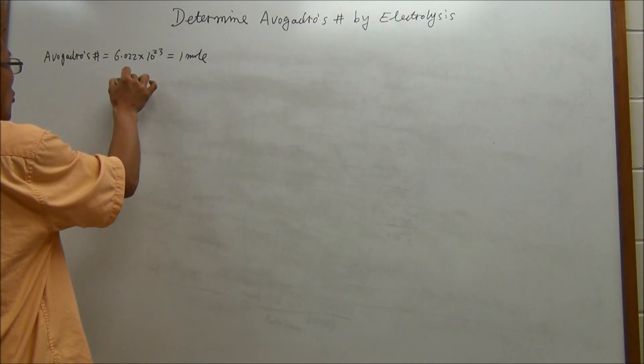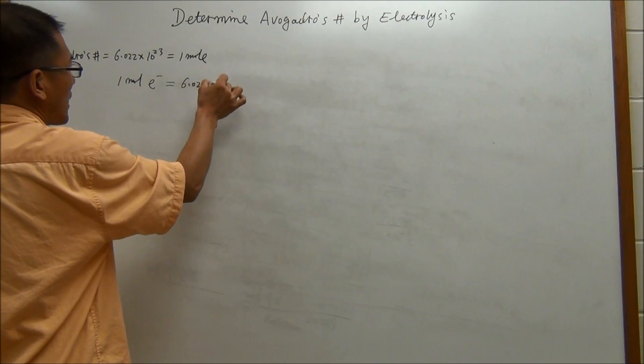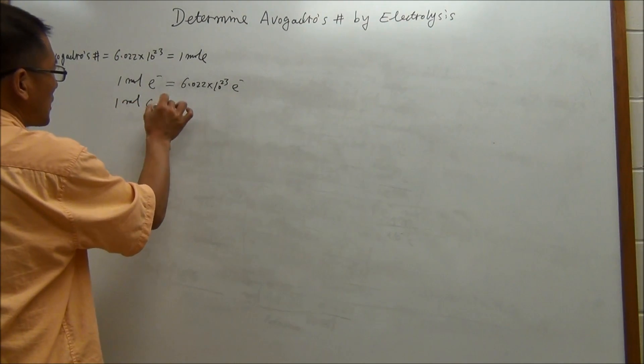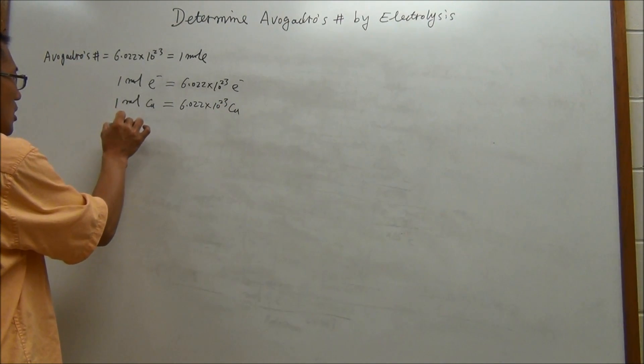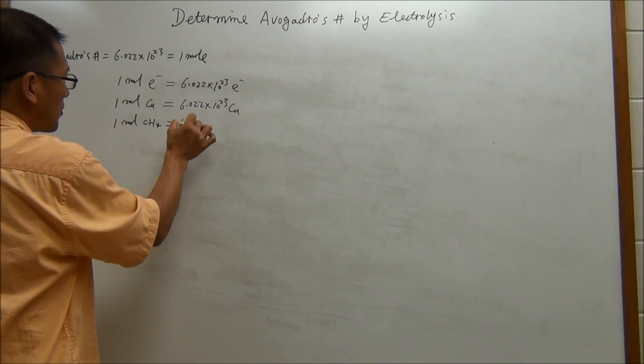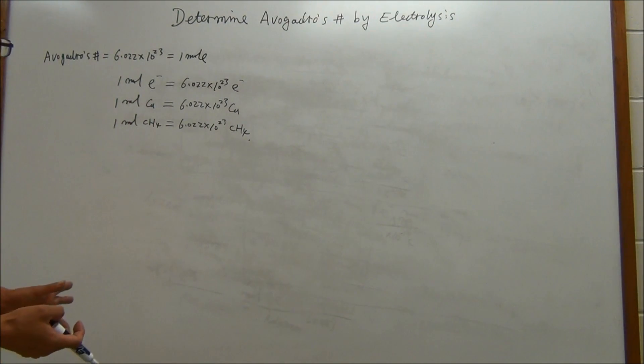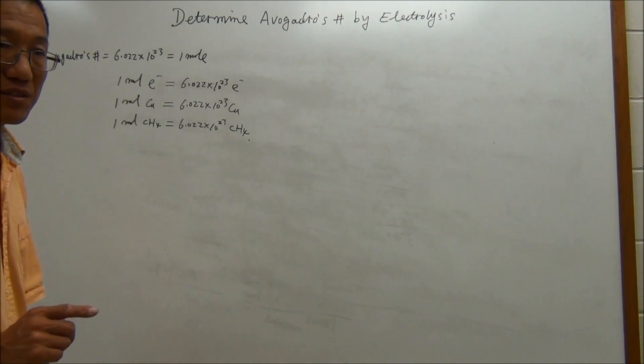When we say you have one mole of electrons, then you have 6.022 times 10 to the 23rd electrons. If you have one mole of copper, then you should have 6.022 times 10 to the 23rd copper atoms. If you have one mole of CH4, you should have this many number of CH4 molecules. I want you to make sure you understand Avogadro's number is just a number. It doesn't have a unit.